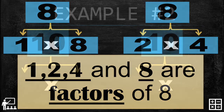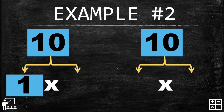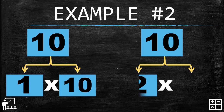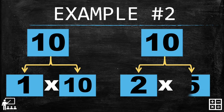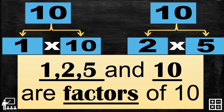Let's try another example — number two. This time I'll give you the number ten. Can you guess the pair number of one? That's right, ten. How about the pair of two? Correct, that's five. To summarize, one, two, five, and ten are factors of ten.